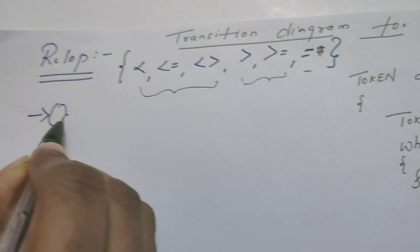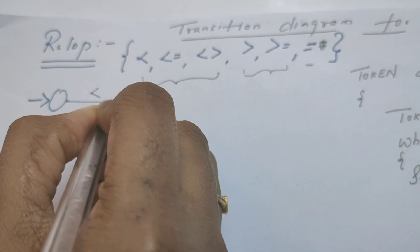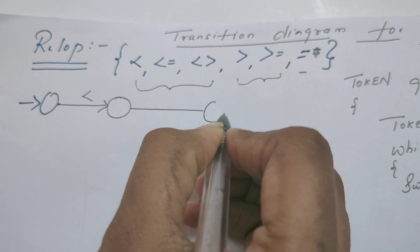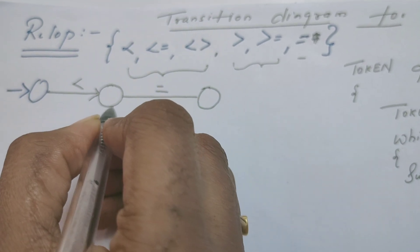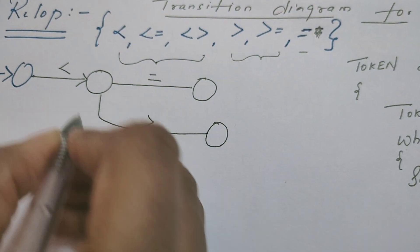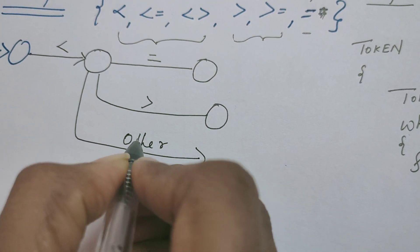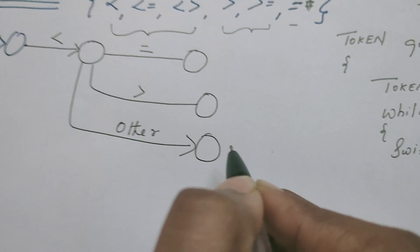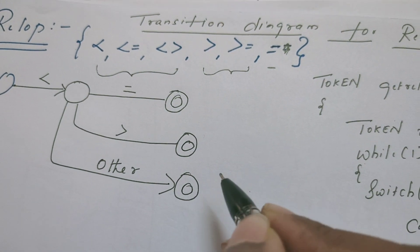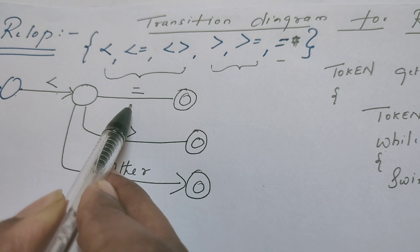This is the start state. From the start state, we design a transition for the input less than symbol. From here, it may be further followed by an equal to symbol, or this less than symbol may be followed by a greater than symbol, or it enters some other state if it is not followed by any operator symbol. These are all in fact the final states. From the start state, if it reads less than symbol and is further followed by equal to symbol...